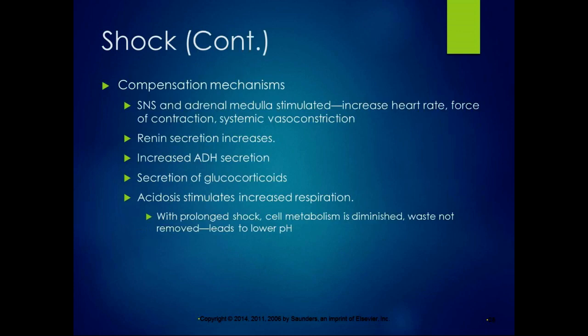The body's compensation mechanisms in response to shock include sympathetic nervous system and adrenal medulla stimulation — that anxiety is one symptom of sympathetic involvement. The sympathetic nervous system increases heart rate, increases force of contraction, and causes systemic vasoconstriction to raise blood pressure. We also get increased secretion of renin affecting blood pressure, increased secretion of antidiuretic hormone to preserve fluid, increased secretion of glucocorticoids, and because there's more carbon dioxide than oxygen, you end up with acidosis and increased respiration.